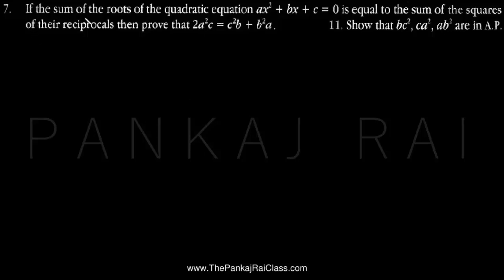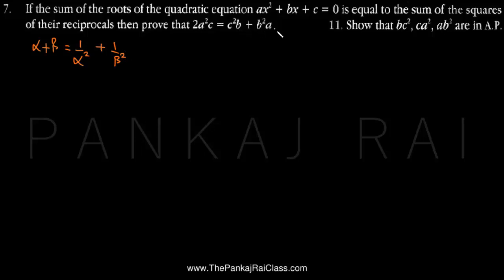The problem says that if the sum of roots of a quadratic equation, that is alpha plus beta, is equal to the sum of the squares of the reciprocals, that is 1 by alpha square plus 1 by beta square, then we have to prove that 2a²c = c²b + b²a, and further that bc², ca², ab² are in AP.